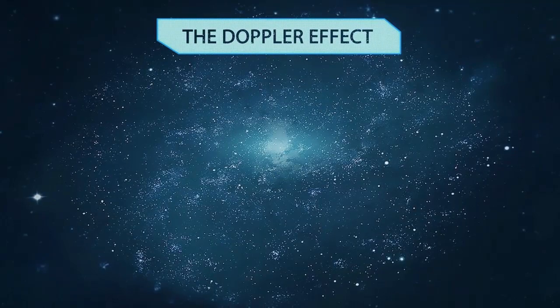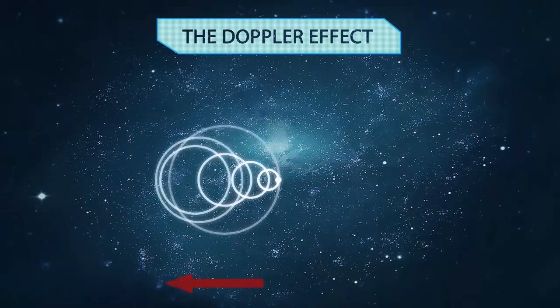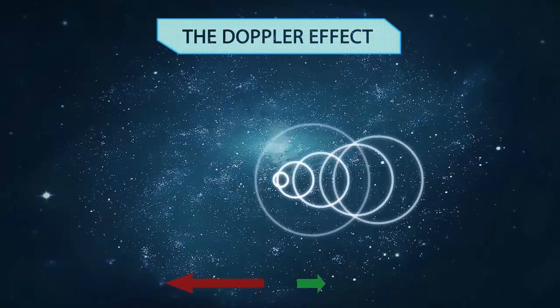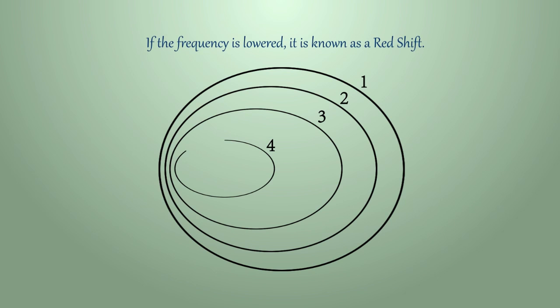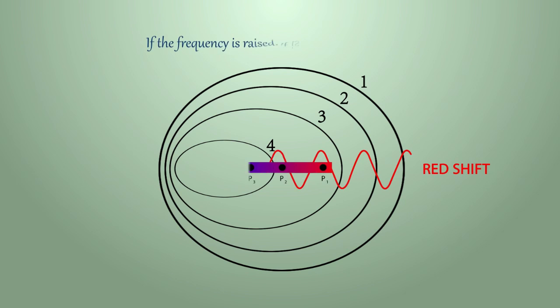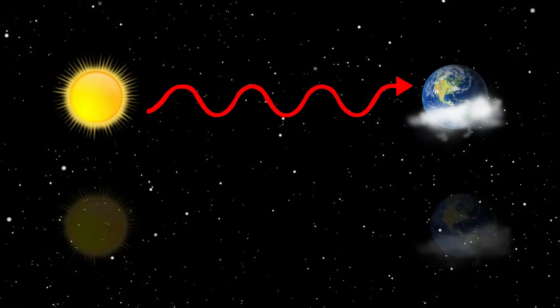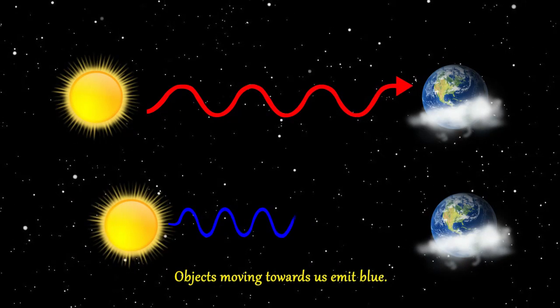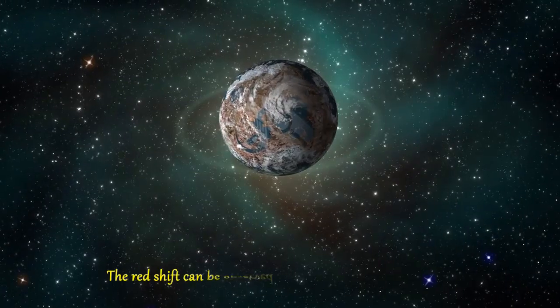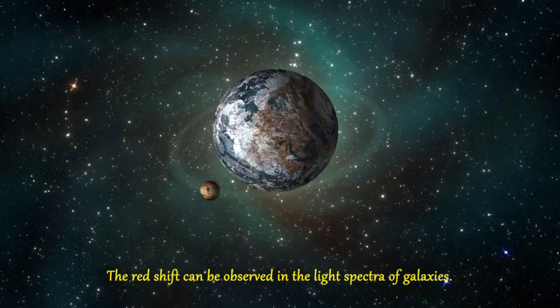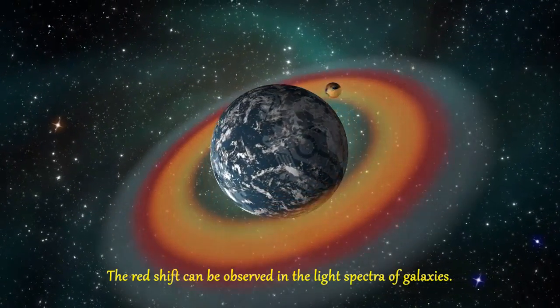The Doppler effect is a shift in frequency observed by scientists which supports the Big Bang Theory. If the frequency is lowered it is known as a red shift. If the frequency is raised it is known as a blue shift. Objects traveling away from us emit a red light. Objects moving towards us emit blue. The red shift can be observed in the light spectra of galaxies which establishes the universe is indeed expanding.